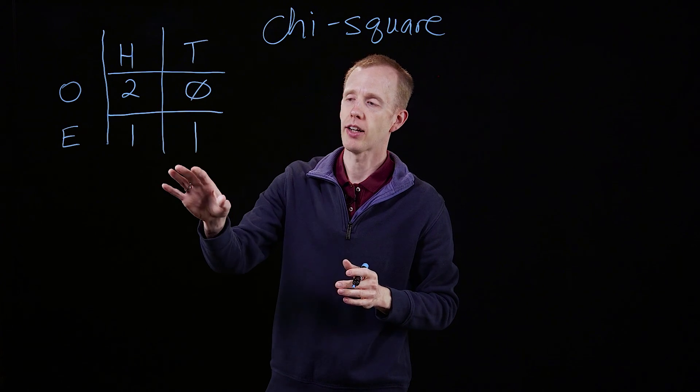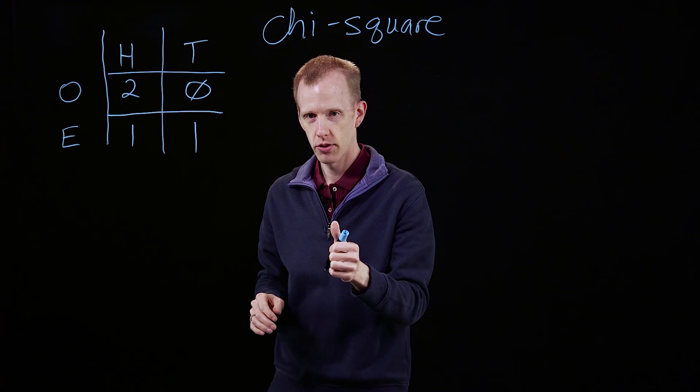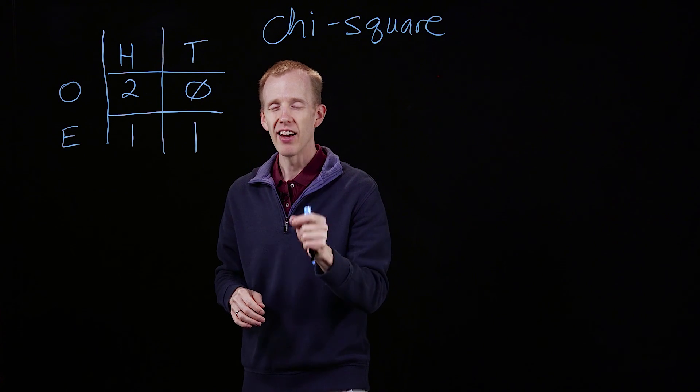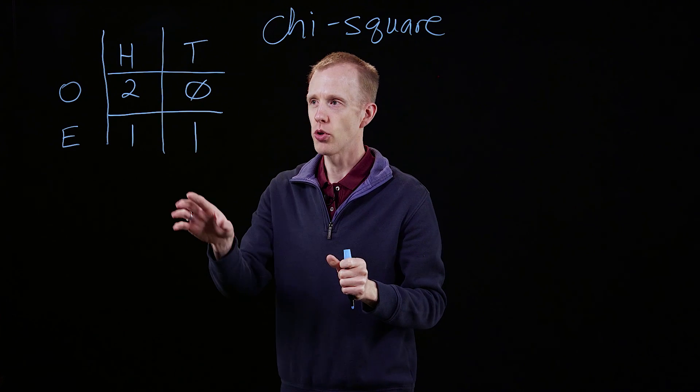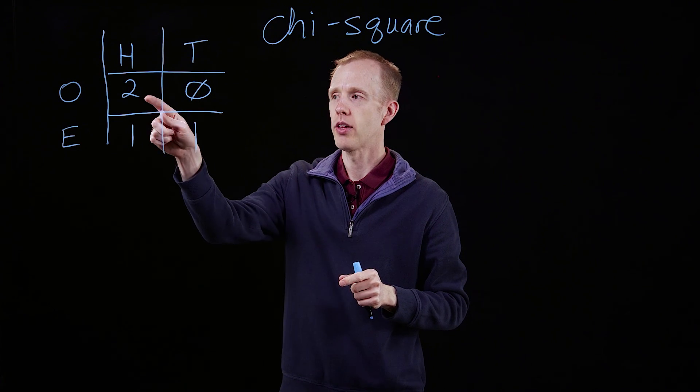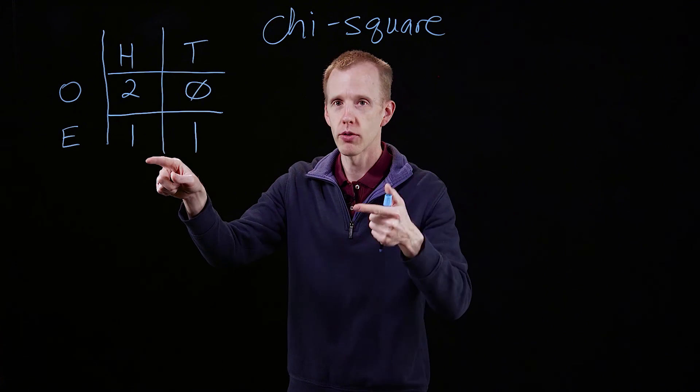So now we have observed and expected counts. Numbers of observations, never frequencies. So you can do a chi-square test with whole numbers. This is how many observations that we made.